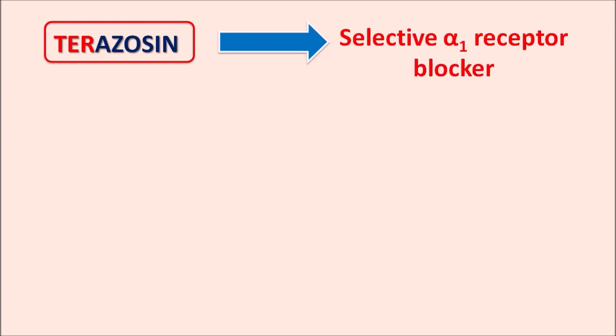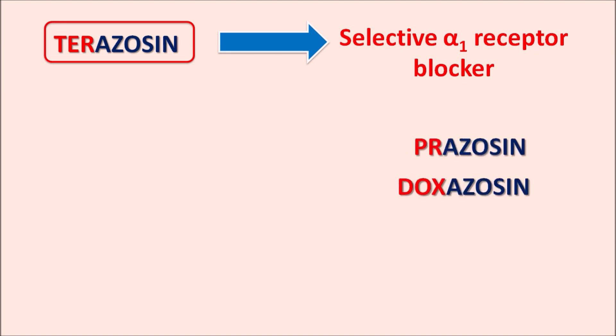Today in this video we are going to discuss about Terazosin. What is this drug Terazosin? This drug is a selective alpha-1 receptor blocker, and here we can observe the suffix '-azosin'. We have a few other drugs within this category with the same suffix — for example, Prazosin and Doxazosin, both of which belong to the same category.